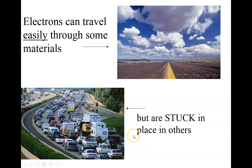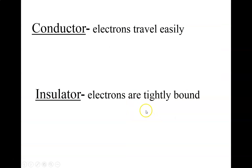Electrons can go easily around in some materials — they can travel quite easily — but in some materials they're stuck in place. That's because of the electron structure of that material, the valence electrons and things like that. In a conductor, the electrons can travel easily from one place to another. In an insulator, the electrons are pretty much stuck in place.